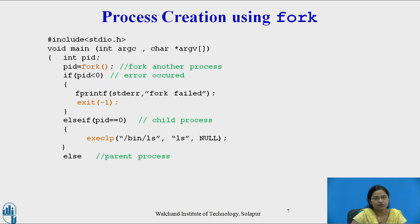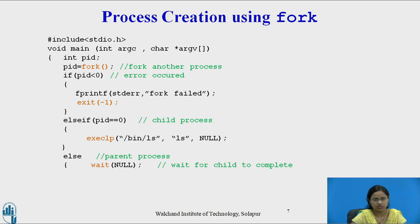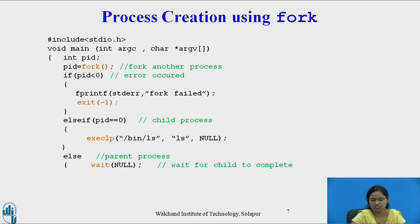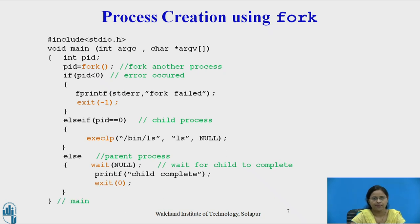After completion of the child process, the parent process executes. The wait system call is used here because the parent process is waiting for child termination. The parent waits until the child process completes its execution. After completion of the child process, the parent prints 'child complete' and exits. This is how the fork system call can be used to create processes in Unix.